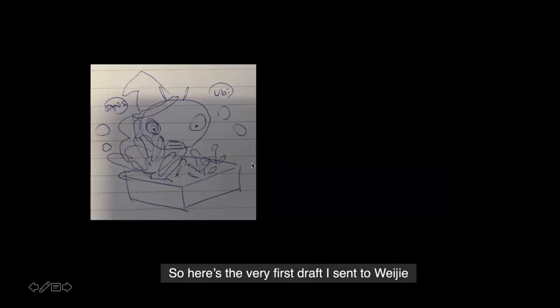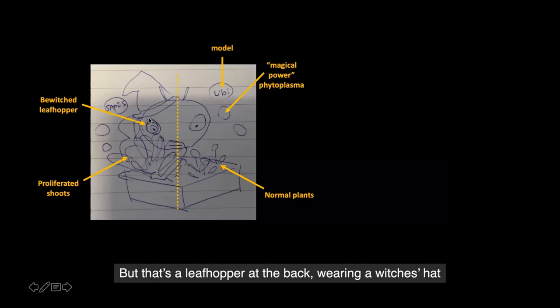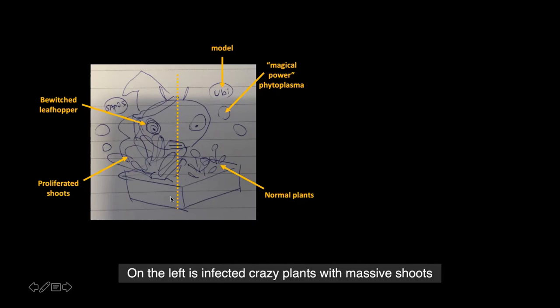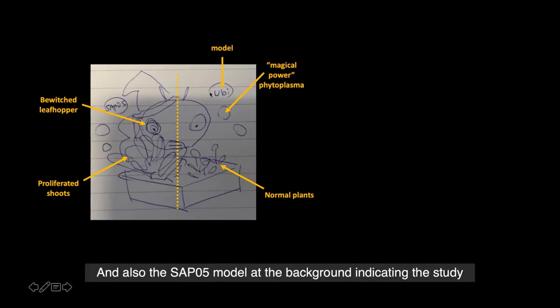Here's the very first draft I sent. I know, it really needs great imagination — but there's a leafhopper at the back wearing a witch's hat. There's a tray in front of it. On the right are normal healthy plants, on the left are infected plants with massive shoots. Phytoplasma is the mysterious power surrounding them. And also a sepal-ification model at the background indicating the study.